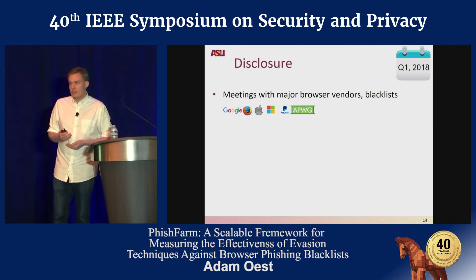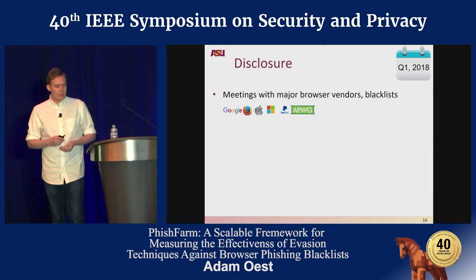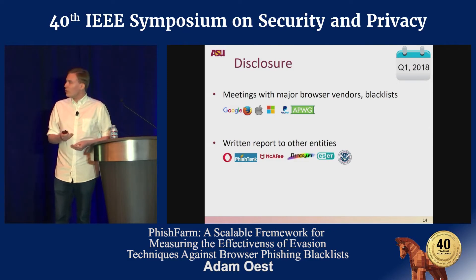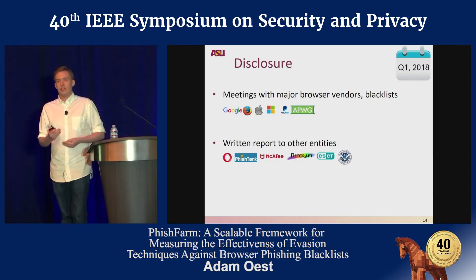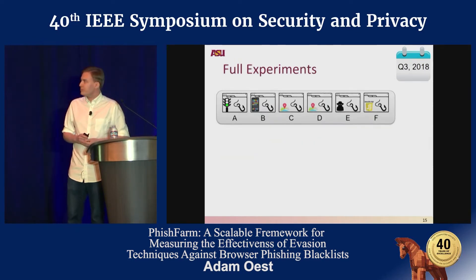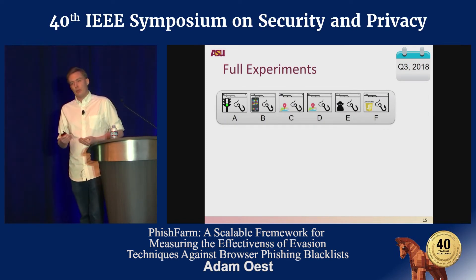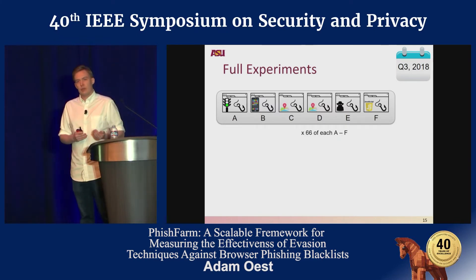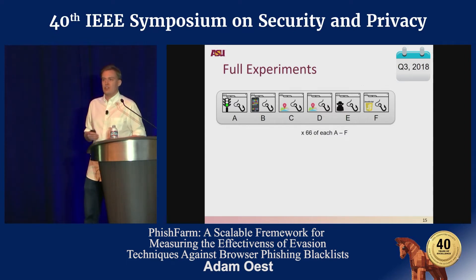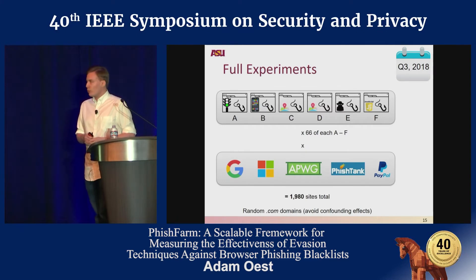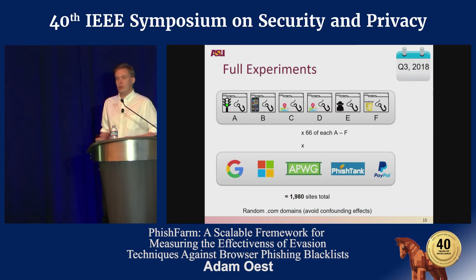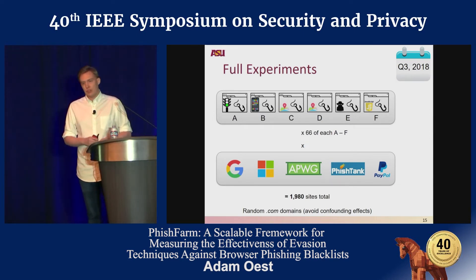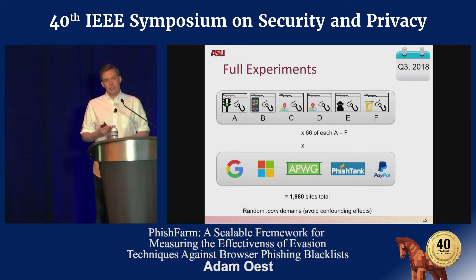After the preliminary experiments, we had a number of security recommendations which I'll get into later. We started by having disclosure meetings with the top browser vendors and anti-phishing entities, and also put together a written report for other organizations involved in the study. We then moved on to the full experiments. The preliminary experiments confirmed these six cloaking techniques were good choices, so we scaled up from six per technique to 66 per technique — a total batch size of about 400 sites per entity — reporting each batch to each entity for a total of almost 2,000 sites. For the full experiments, all URLs were random to eliminate that as a confounding factor.